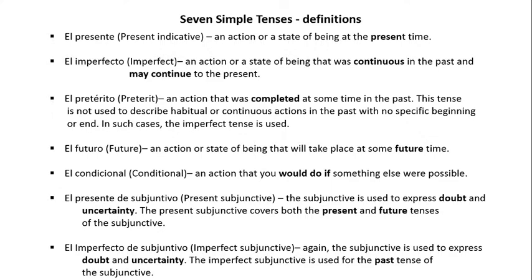Now below you have the definitions of the seven simple tenses. El presente, the present indicative, is an action or a state of being at the present time. El imperfecto, the imperfect, is an action or a state of being that was continuous in the past and may continue to the present. El pretérito, or the preterite, is an action that was completed at some time in the past. This tense is not used to describe habitual or continuous actions in the past with no specific beginning or end — in such cases, the imperfect tense is used. El futuro, the future tense, is an action or state of being that will take place at some future time.